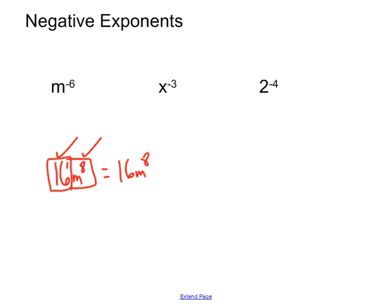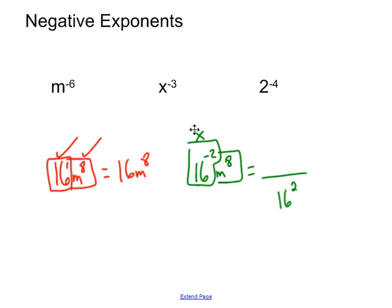But what if we said this was 16 to the negative 2nd power times m to the 8th? Ask yourself: what is the coefficient's exponent? In this case it's negative, so that's the one that has to move down to the bottom. The m to the 8th has a positive exponent, so we keep it exactly where it's at. We moved the 16 down because of the negative exponent.